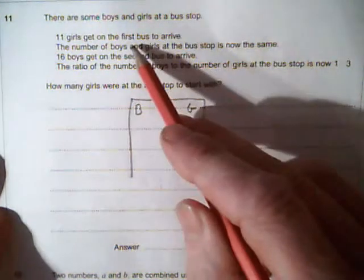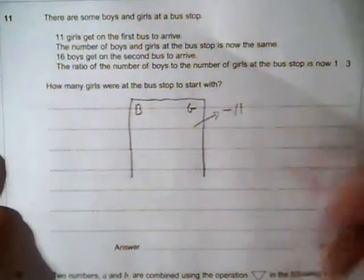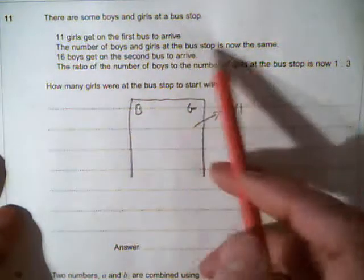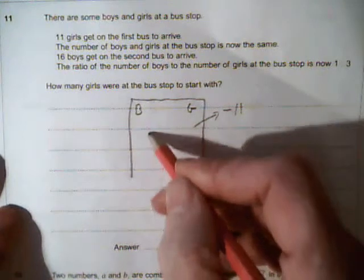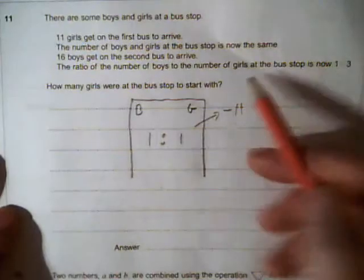Then a bus comes along and 11 girls get on the first bus. So we're going to lose 11 from the bus stop. Then we read the number of boys and girls at the bus stop is now the same, so we can put that in a ratio 1 to 1, even boys and girls.